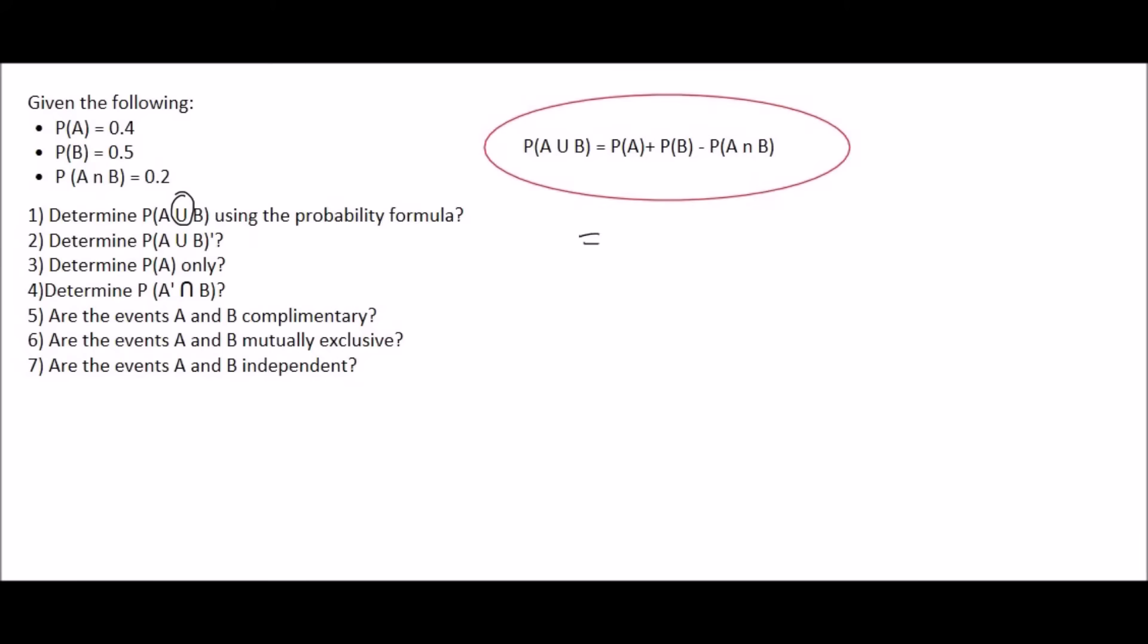So all we do is fill in the values. The probability of A, they've told us, is 0.4, plus the probability of B is 0.5, minus the probability of A and B, which is 0.2. If you add all that together, you get a value of 0.7.